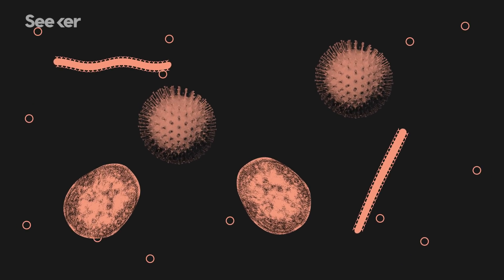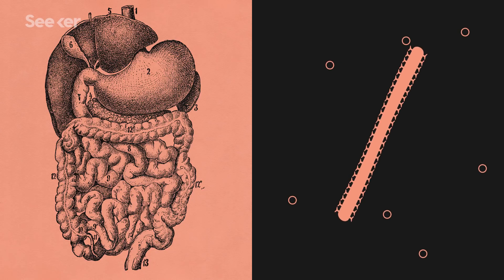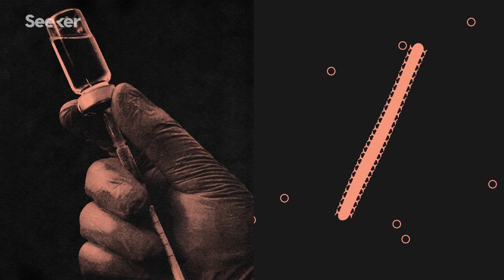There are few diseases out there as grisly as Ebola. But how exactly does Ebola work? Where did it come from? Why are its outbreaks so difficult to contain? And is there any hope of getting rid of it once and for all?